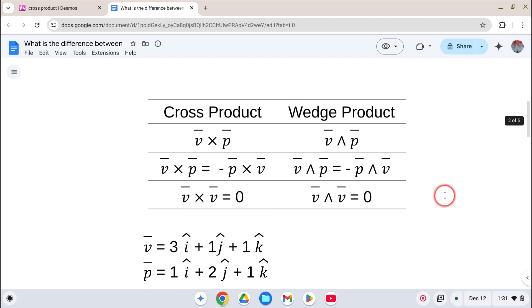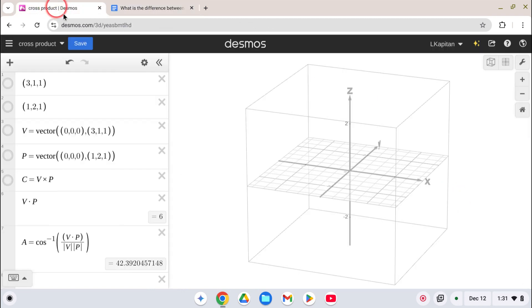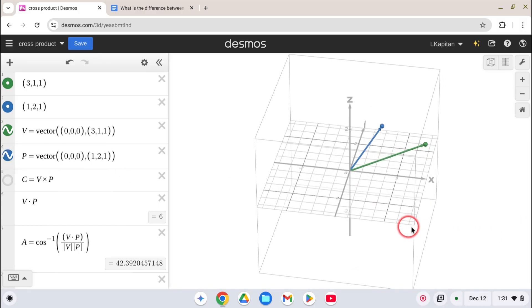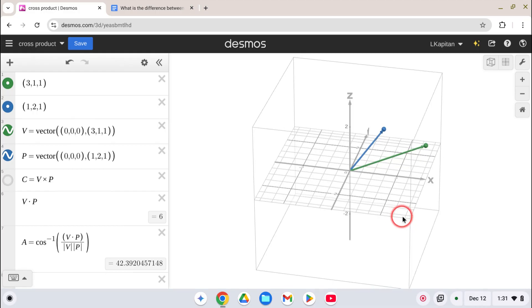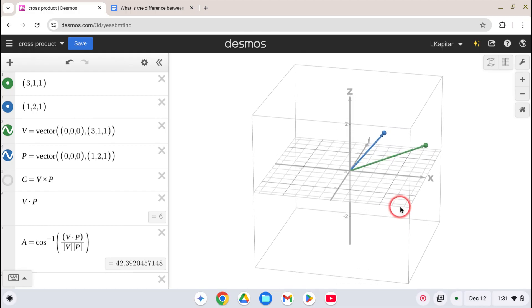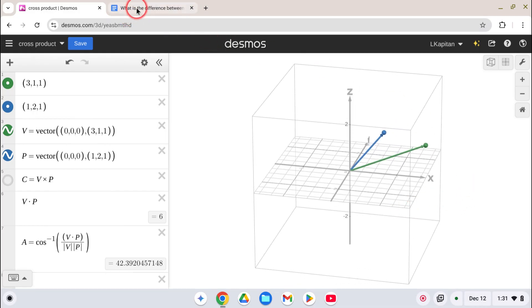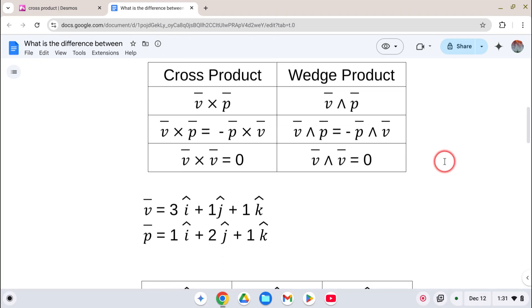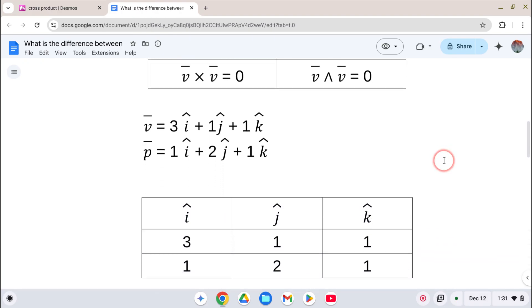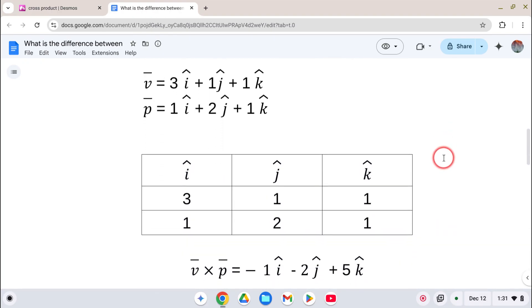So let's make up a couple of vectors here. Let's use our Desmos. So we've got three points. We've got 3, 1, 1, and 1, 2, 1. We want to put some vectors on those guys. So here we've got these two vectors. And we want to take the cross product of this. Everybody knows how to do this, but let's go through it because it's fun.